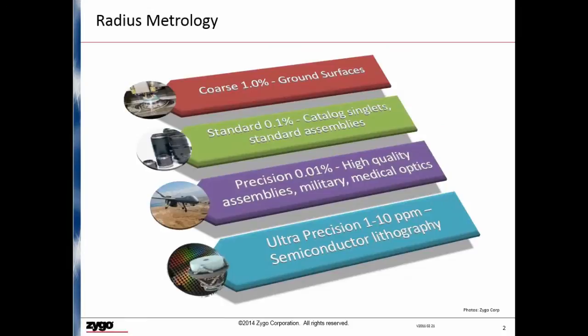When we look at the precision required for radius metrology, the uncertainty is driven by the application. We start with coarse measurements typically made on ground surfaces during a generating process. At this level an uncertainty of 1% is adequate. We then move on to standard catalog optics and lower precision commercial optics. These elements typically require uncertainties of about 0.1%.